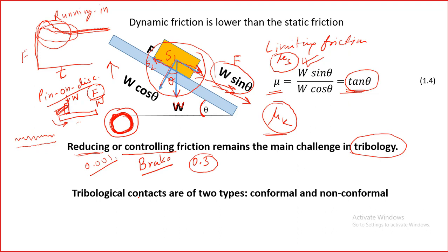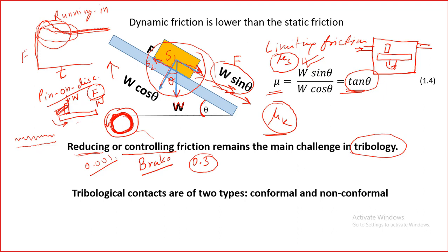Regarding whether the disc rotates in open atmosphere — the machine we have is in open atmosphere, but you can also make it in a closed environment. You can design a chamber with a gas inlet and gas outlet, and also a depressurizing mechanism if you want to create a vacuum. So you can do that with an enclosed chamber.